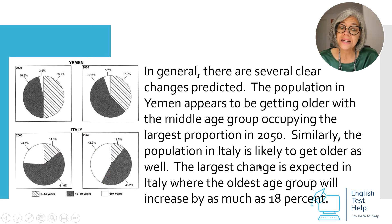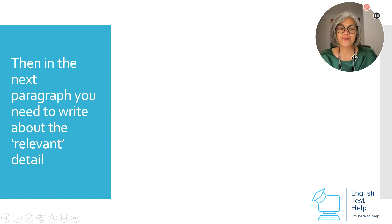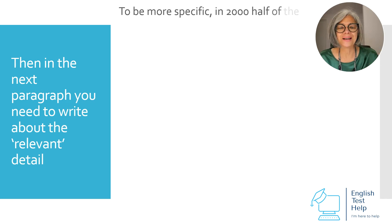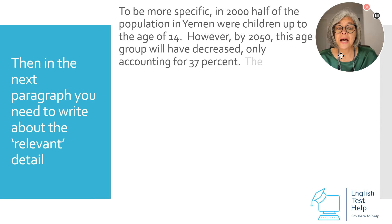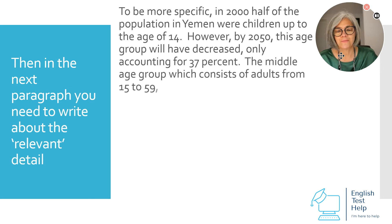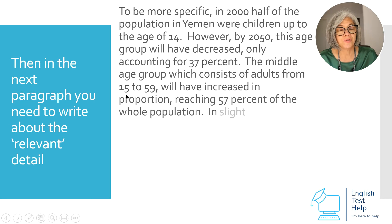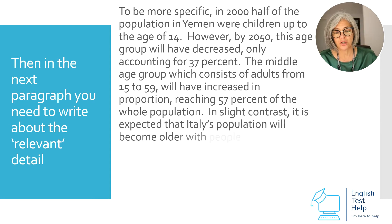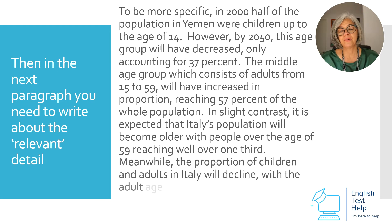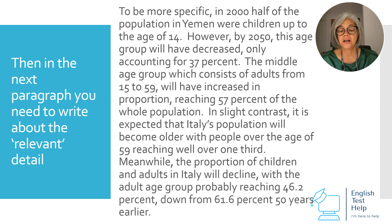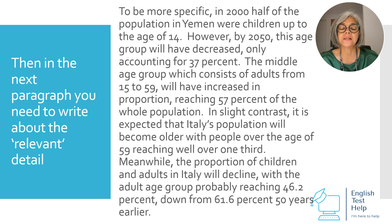What do you write about in the next paragraph? Detail. To be more specific, in 2000 half of the population in Yemen were children up to the age of 14. However, by 2050 this age group will have decreased, only accounting for 37%. The middle age group, which consists of adults from 15 to 59, will have increased in proportion, reaching 57% of the whole population. In slight contrast, it is expected that Italy's population will become older, with people over the age of 59 reaching well over one third. Meanwhile, the proportion of children and adults in Italy will decline, with the adult age group probably reaching 46.2%, down from 61.6% 50 years earlier.